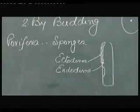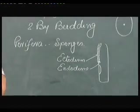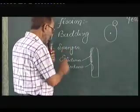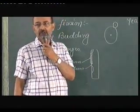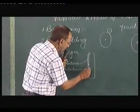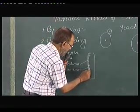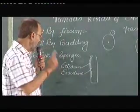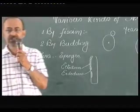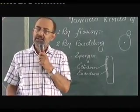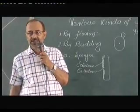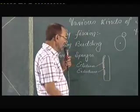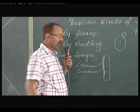When the sponges mature, some cells of the endoderm carry out the process of budding. A single cell in the endoderm enlarges sufficiently and then divides by mitosis, producing a number of cells. Thus, newly formed bud cells are produced along the inner surface of the body wall.